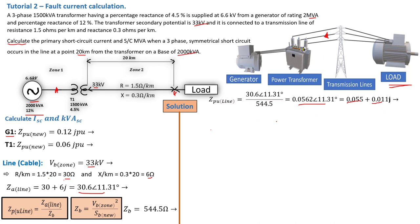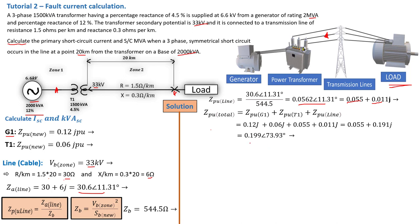To calculate the short circuit current, we need the total per unit impedance — the sum of the per unit values of the generator, transformer, and transmission line. Z per unit total = Z generator + Z transformer + Z line, giving a total per unit impedance of 0.199 at an angle of 73.9 degrees — essentially 0.2 at 74 degrees.